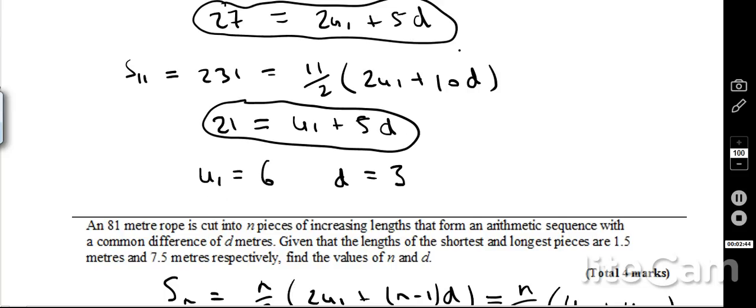Therefore u1 is 6, and d is 3, and all I've done for that last stage is, I've got simultaneous equations, so if I do this top equation here, take away this bottom equation here, I can then find out u1, and then I can find out what d is equal to.